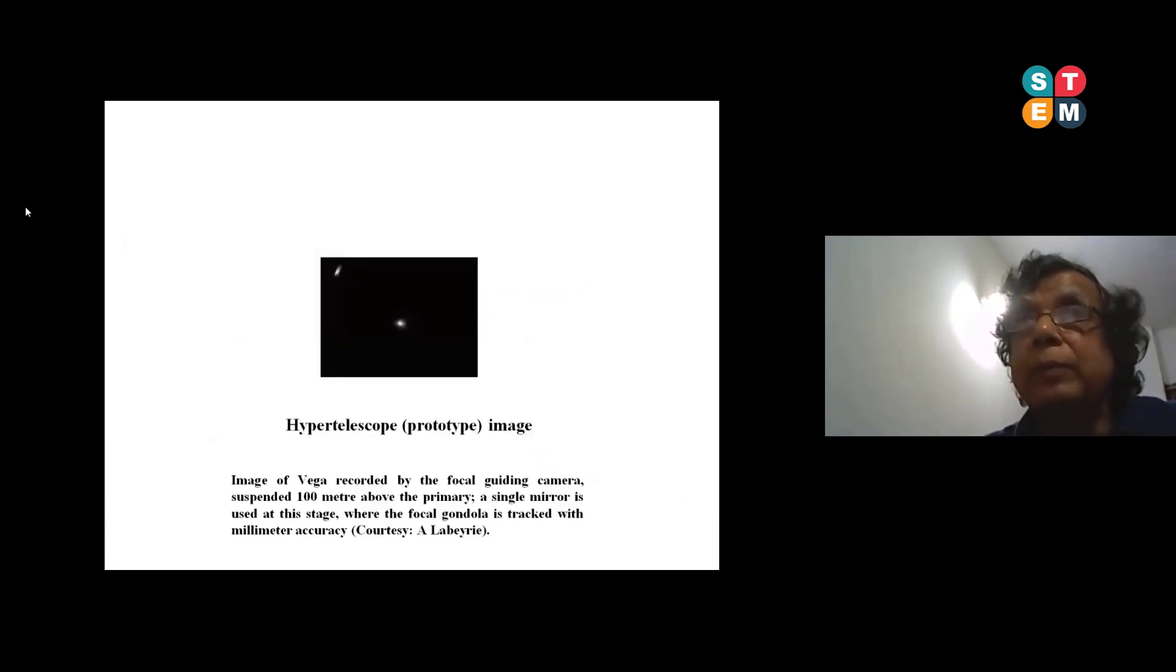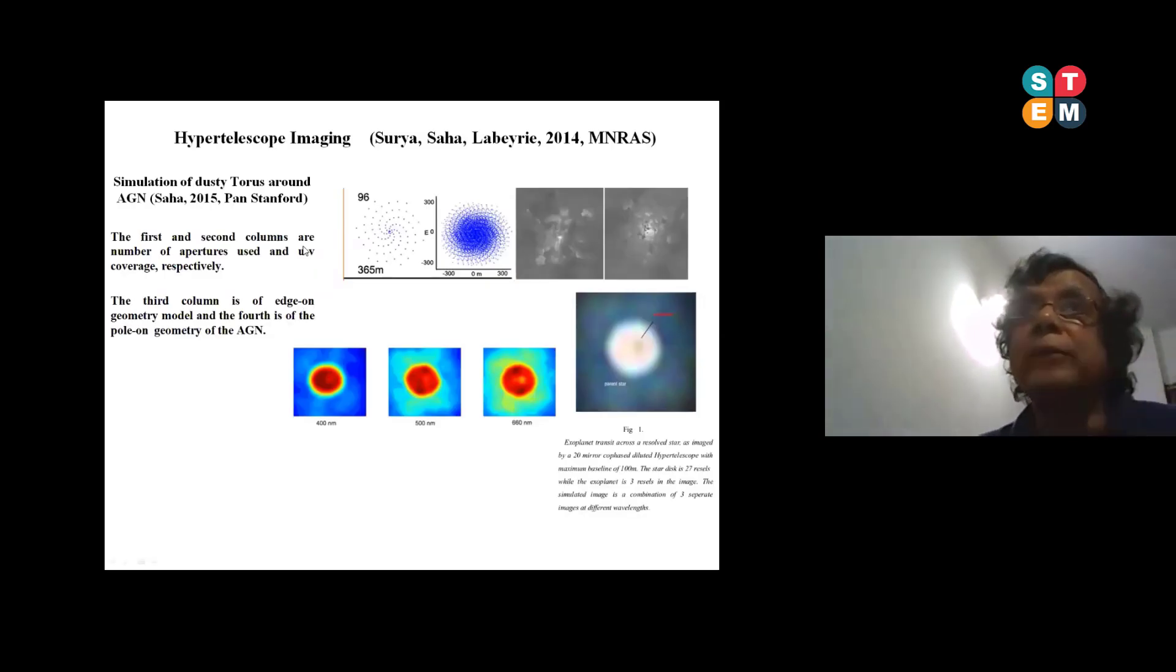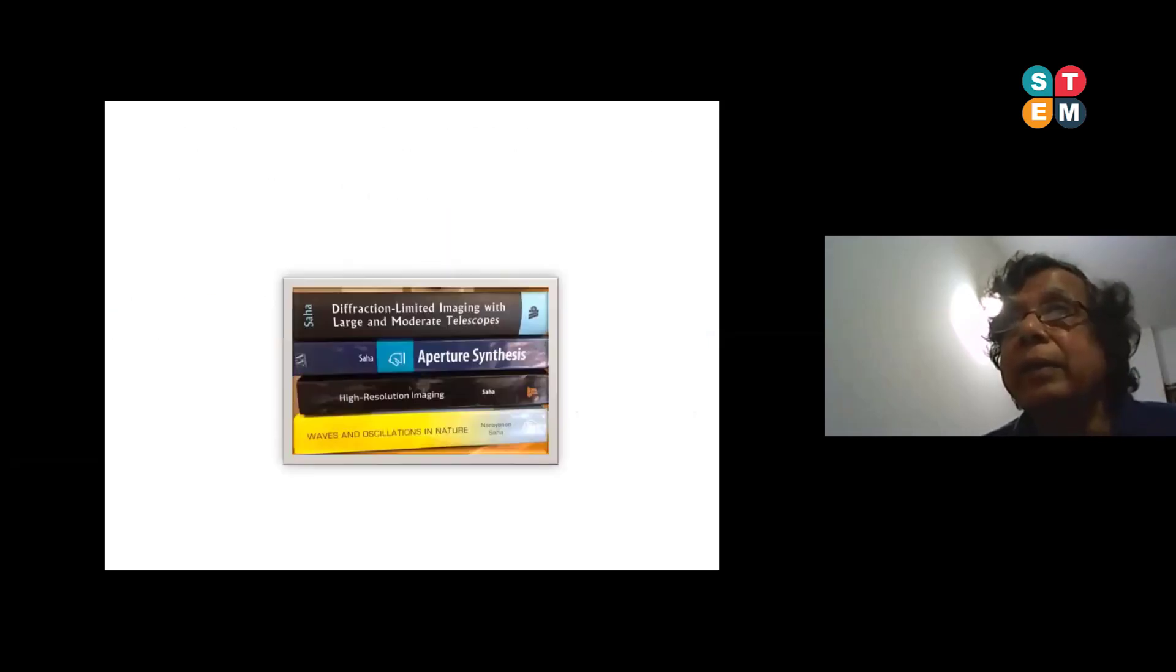The gondola was about 100 meter high and they took Vega, that is alpha Lyrae, which was overhead at Nice Observatory. They took an image. We did calculations that if you have more number of apertures, like say 96 apertures, how many UV coverage one can have. We did calculation that the AGN torus, and if you have exosolar planets, we can even detect with that many telescopes. We can detect the exosolar, many planets around which moves around the parent star. All those information you will get in these books which I have written between 2007 to 2015.